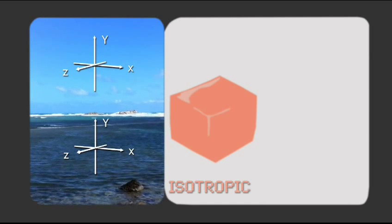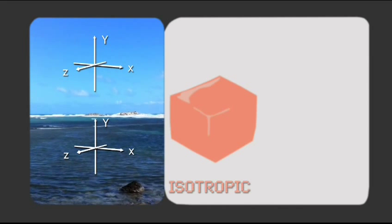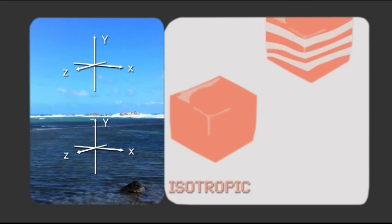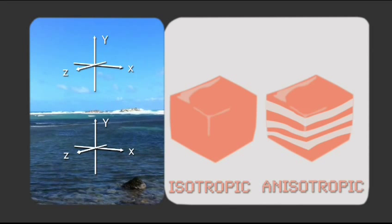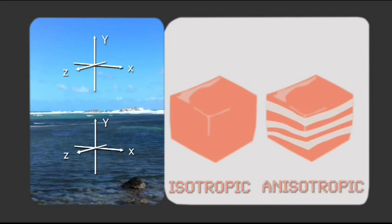A cube of jello is isotropic because its interior is uniform in all directions. On the other hand, jello that is layered is anisotropic because it has strong and weak layers.